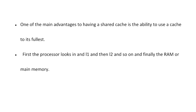One of the main advantages of having a shared cache is the ability to use it to its fullest — if one core isn't using it, the other can. When searching for data, a core first looks through its own unique L1 cache, then branches out to the shared L2 cache, then RAM, and eventually the hard drive.